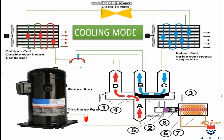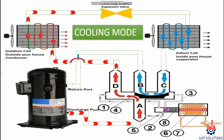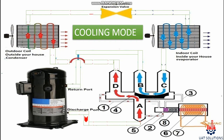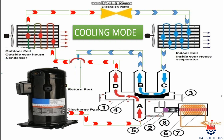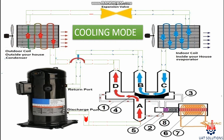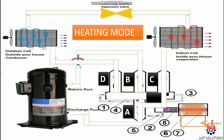The refrigerant goes to the condenser via port D. After condensation, refrigerant passes through the metering device and is sprayed into the evaporator coil, then enters the four-way valve port C, passes through port B, and enters the compressor suction line. This cycle keeps repeating as long as the compressor stays in operation.